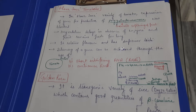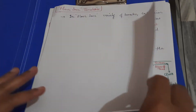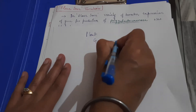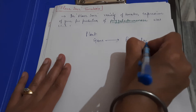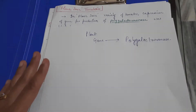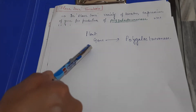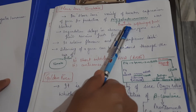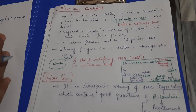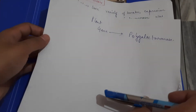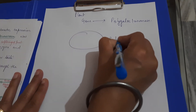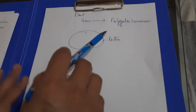We are studying Flavor Savor tomato. Flavor Savor is a variety of tomato. There is a gene in the tomato plant which is expressed as an enzyme called polygalacturonase. The function of this enzyme is to promote softening of the fruit. The outer shell of the tomato is made up of pectin.